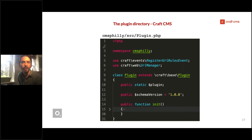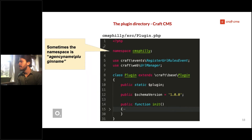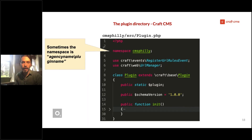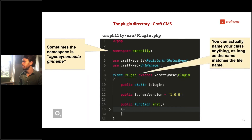Digging into the plugin.php file — the very basic components: the namespace is typically agency name, plugin name — here I'm just writing the namespace 'CmsPhilly.' Namespaces are a means to prevent class collisions, to effectively create long class names for your plugin so that no one else has created a plugin with the same name in the entire system. You can name your class anything as long as the name matches the file name.